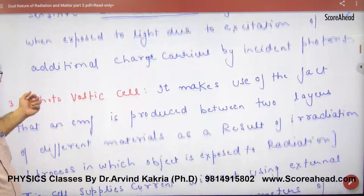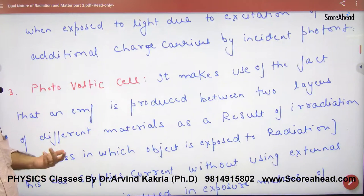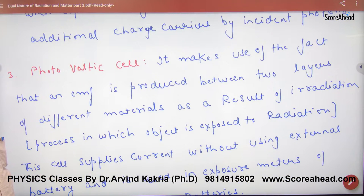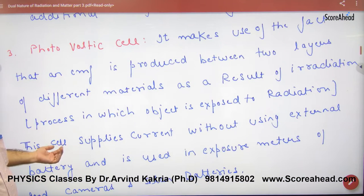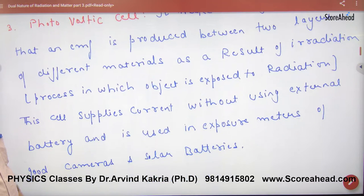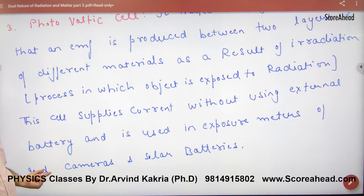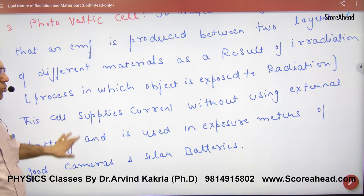The third type is the photovoltaic cell. It uses two different layers of materials. As a result of irradiation, this cell supplies current without using an external battery, and is used in exposure meters, good cameras, and solar batteries.